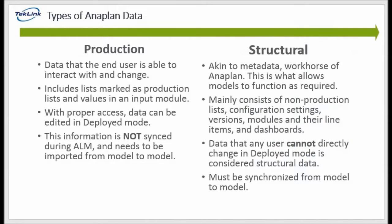AnoPlan considers two different types of data as separate entities: production data and structural data. Knowing the difference between the two is fundamental to understanding how ALM functions. Production data is data that the end user can add, edit, and delete. These are the values either put in by the end user in input modules or lists that have been marked as production lists. This is the data that is editable in deployed mode. However, this data is not synced during ALM and needs to be connected from model to model through data imports.